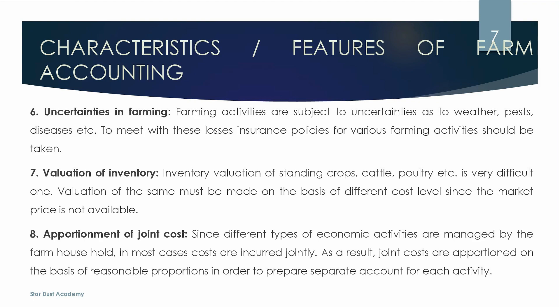Next is valuation of inventory — inventory value includes standing crops, cattle, poultry, etc. Next is apportionment of joint cost — if we purchase a farm input used across activities, we apportion the joint cost and prepare separate accounts for each activity.